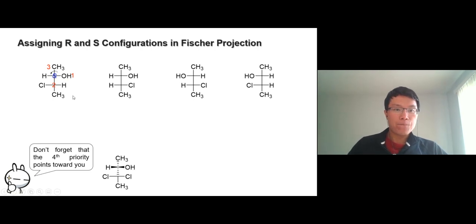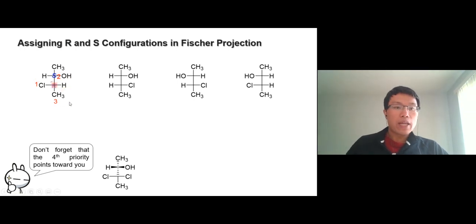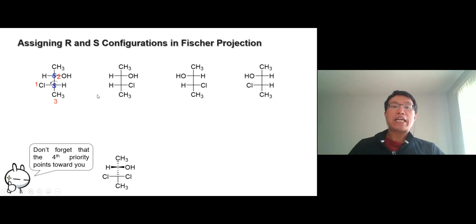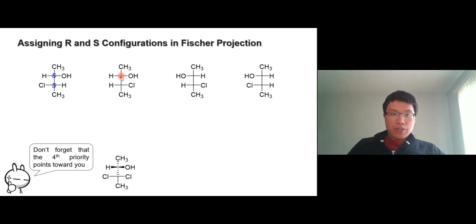Coming down to the second chiral center: chlorine gets number one. We have two carbons — the carbon with an OH is number two, and the carbon with three hydrogens is number three; hydrogen is number four. But right now number four is pointing toward you, so watch out. Going one, two, three looks like R — flip it to S. This is why Fischer projection is more convenient for determining the configuration of all stereo isomers.